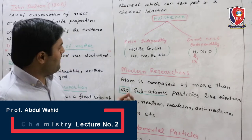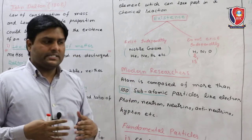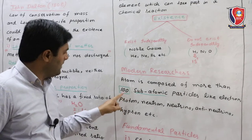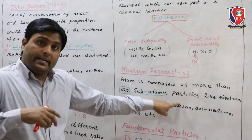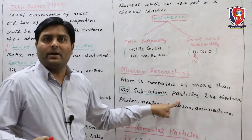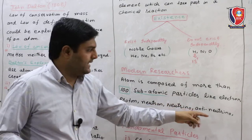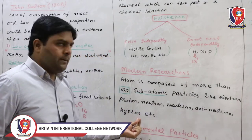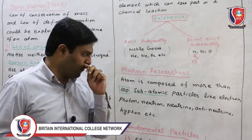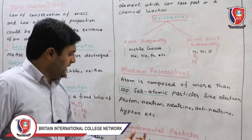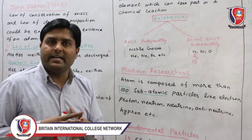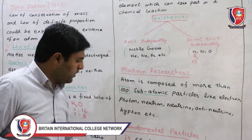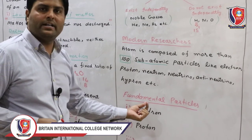After that, there are modern researchers. When it comes to modern research, they said that the atom is composed of more than 100 sub-atomic particles, such as electron, proton, neutron, neutrino, anti-neutrino, hyperon, and others. But among these, three particles are called fundamental particles: electron, proton, and neutron.